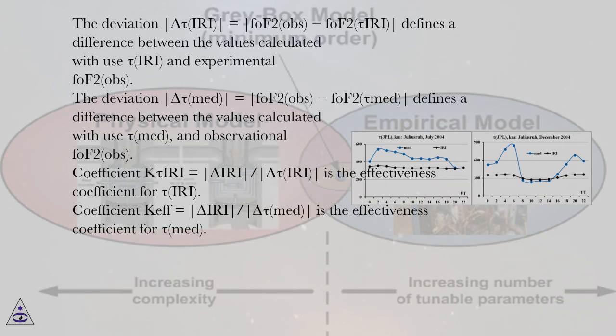Coefficient k tau IRI equals delta IRI vertical bar slash vertical bar delta tau IRI is the effectiveness coefficient for tau IRI.